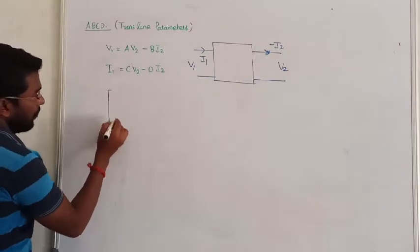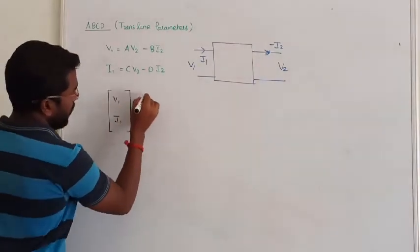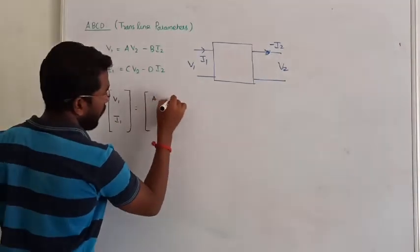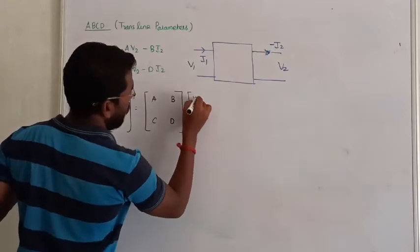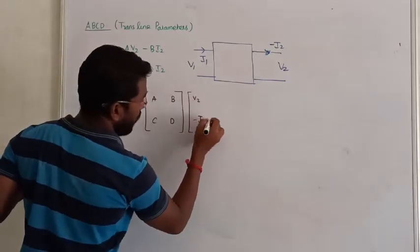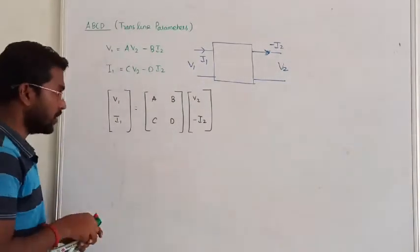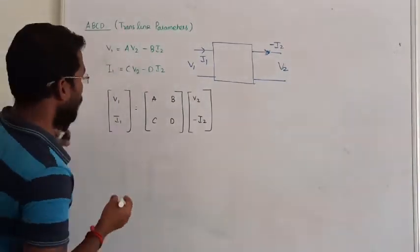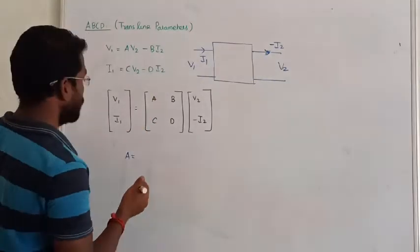If this matrix is written in the matrix, it can be written as V1, I1. So in the matrix, we have A, B, C, D, right? Various values of V2 minus I2. Direction of the current has been watched, removed. Next, suppose the question is, what about the value of I2 is 0?